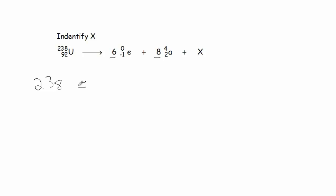The sum of the superscripts on the left side is 238. That must equal the sum of the superscripts on the right side. In this case, 6 times 0, or 6 zeros, is just 0. And here we have 8 times 4, which is 32, plus, in this case, if you subtract 32 from 238, you'll determine that this needs to be 206.